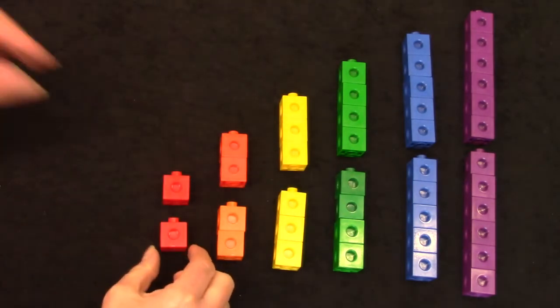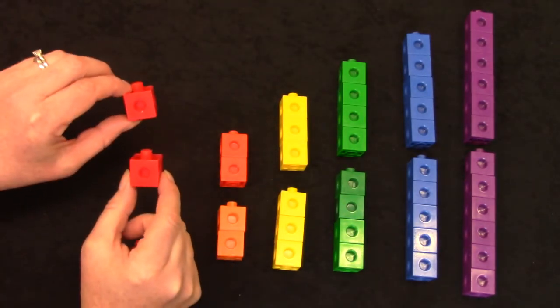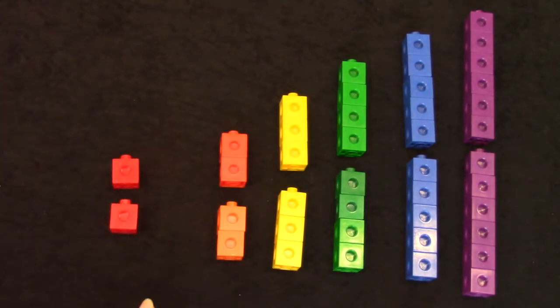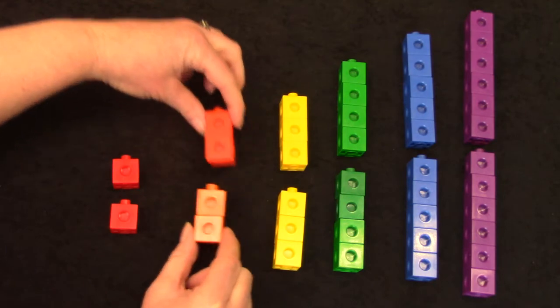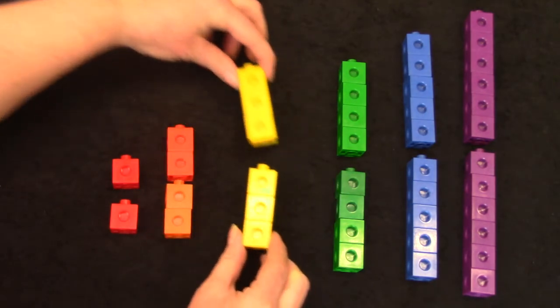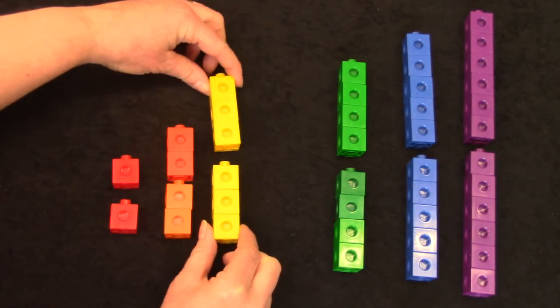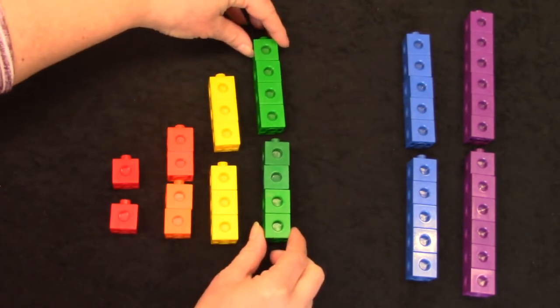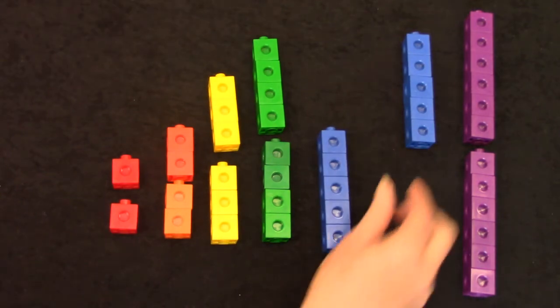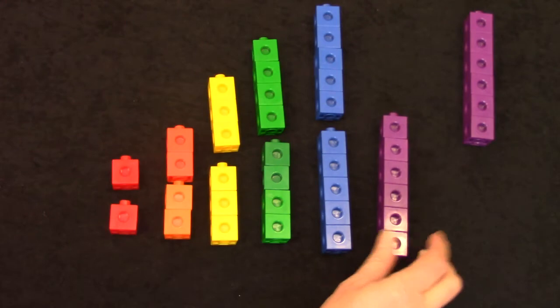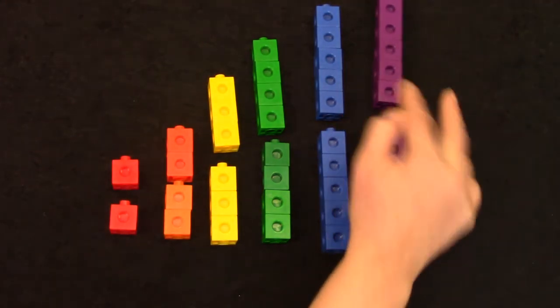Now you already know your doubles facts. If you add one plus one, what would be the answer? One plus one is two. And two plus two is four. Three plus three is six. Four plus four is eight. Five plus five is ten. And six plus six is twelve.